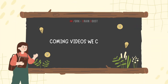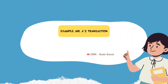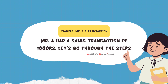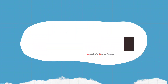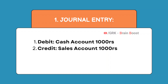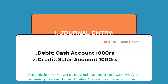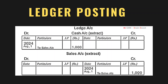In our upcoming videos we will discuss every step mentioned above in detail. For the accounting process, let us consider an example and understand it practically. For example, Mr. A had a transaction of sales rupees 1,000. Let's go through the steps as discussed. First we write the journal entry — what will be the journal entry? Cash account debit, to sales account. Here we debit the cash account because Mr. A is receiving cash, and we credit the sales account because it is an income.